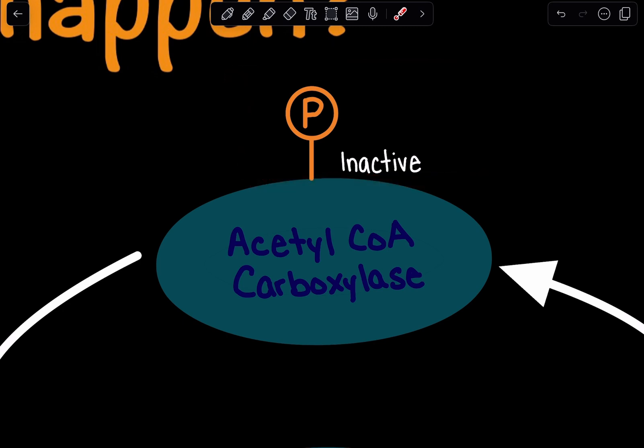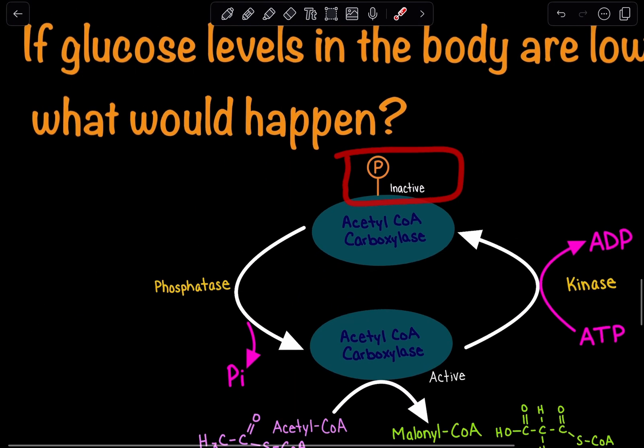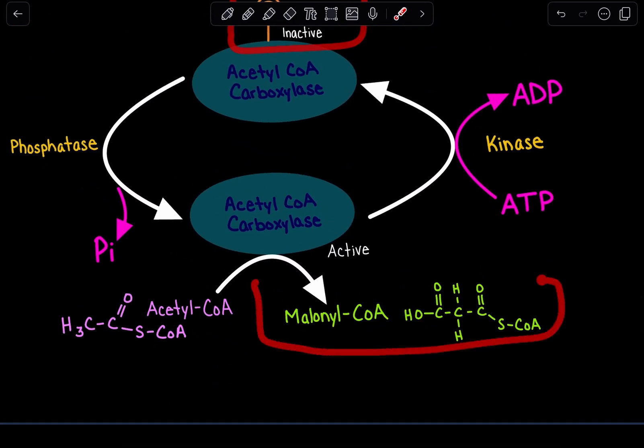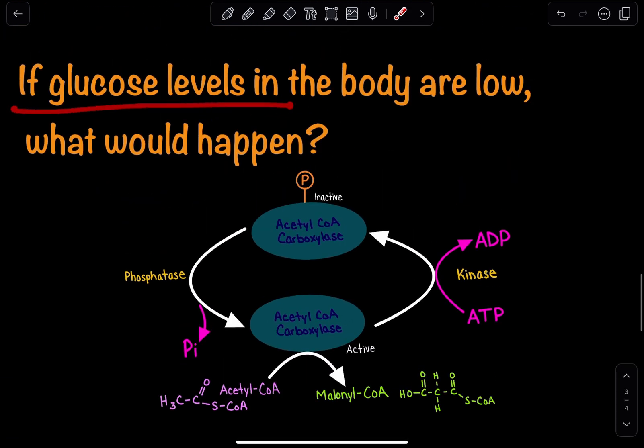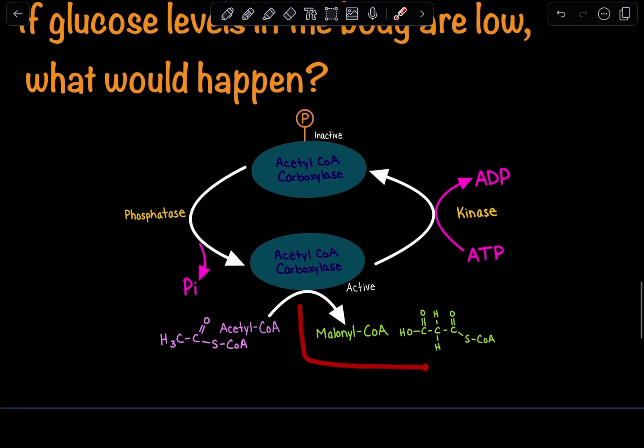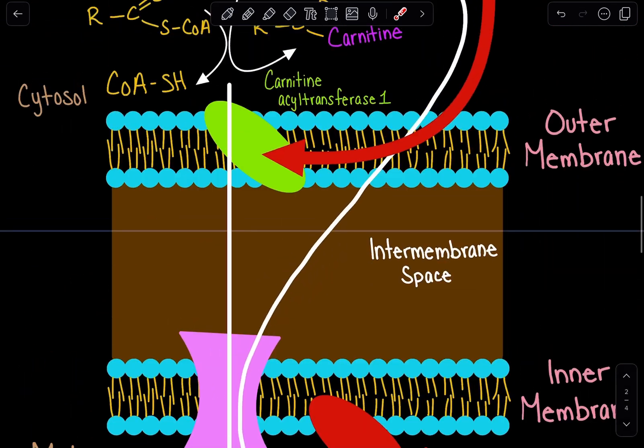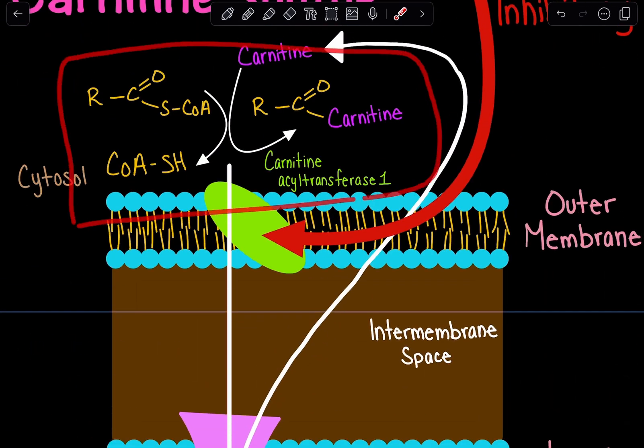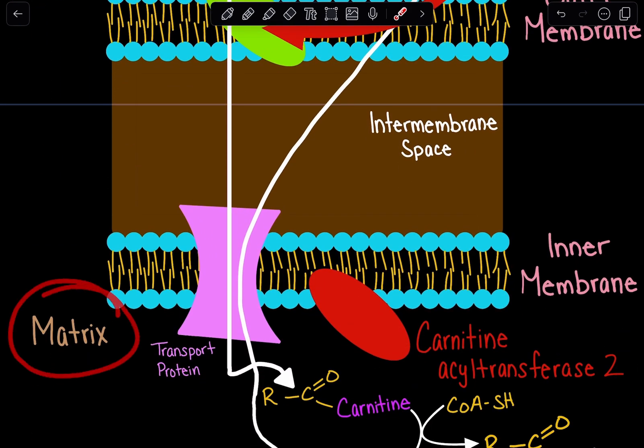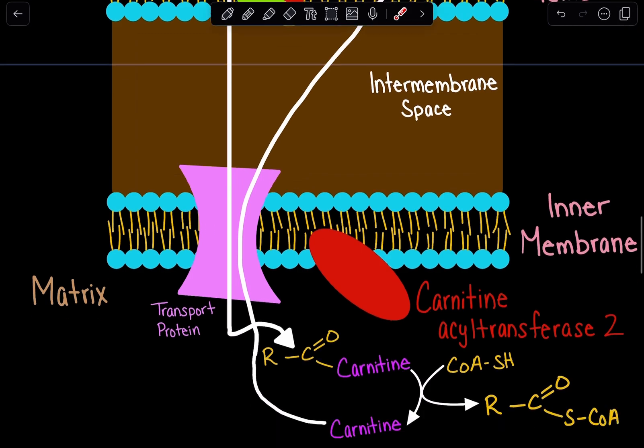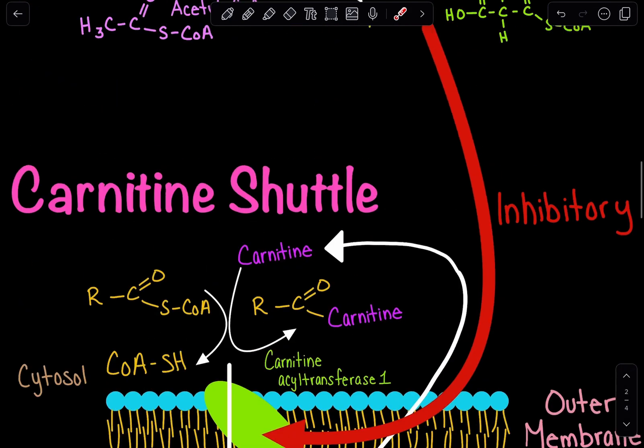If it's not producing malonyl-CoA, the carnitine shuttle will not be inhibited. To recap: when glucose levels are low, acetyl-CoA carboxylase is inactive and phosphorylated, so we don't produce malonyl-CoA. The carnitine shuttle remains active, transporting fatty acids to the mitochondrial matrix where beta-oxidation occurs for energy production.